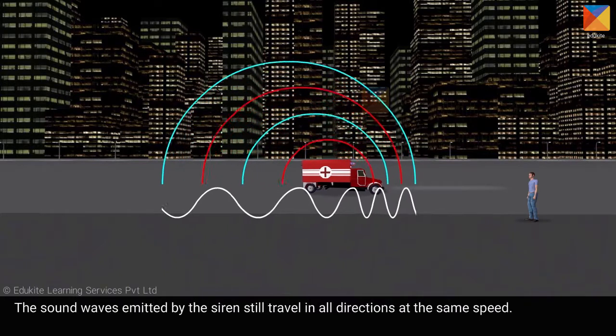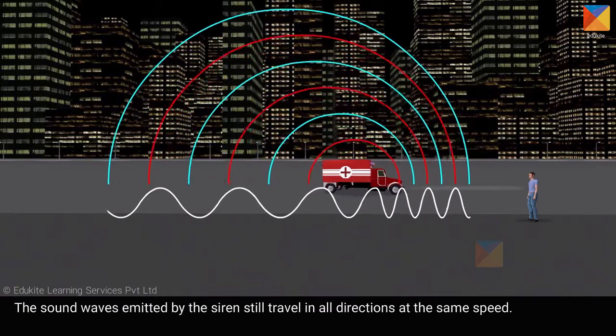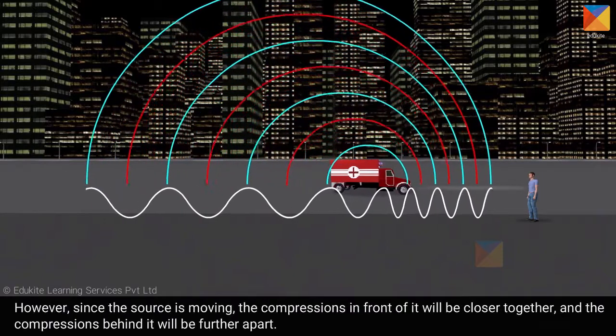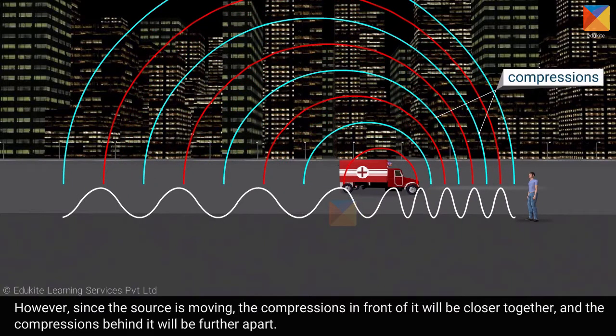The sound waves emitted by the siren still travel in all directions at the same speed. However, since the source is moving, the compressions in front of it will be closer together, and the compressions behind it will be further apart.